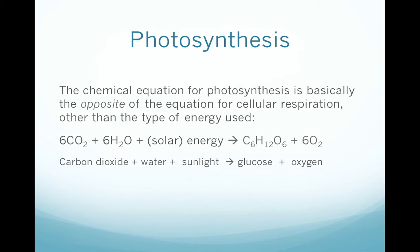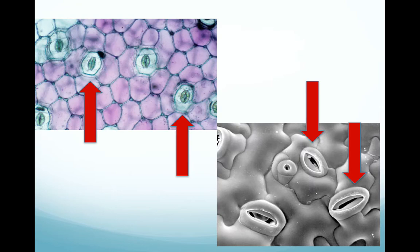The chemical equation is pretty much the opposite of cellular respiration, other than the type of energy used. In cellular respiration, we start with glucose and oxygen and end up with carbon dioxide, water, and energy in the form of ATP. In photosynthesis, the plant starts with carbon dioxide and water with an input of solar energy and ends up with glucose and oxygen. We use glucose rather than G3P in this equation because most of the G3P produced immediately becomes glucose in the cell.